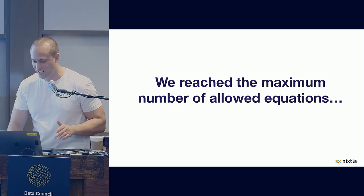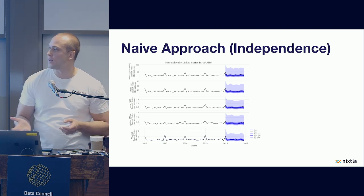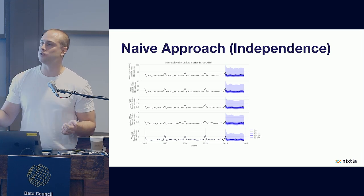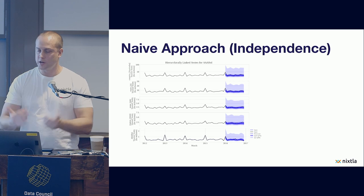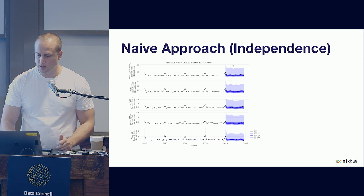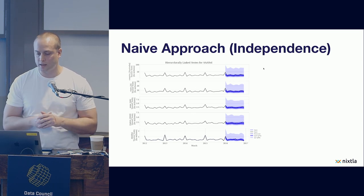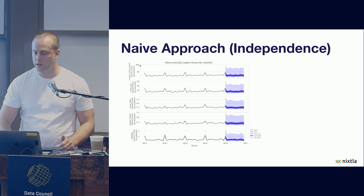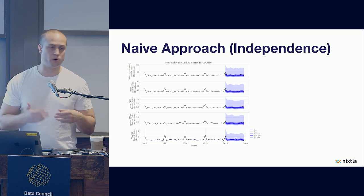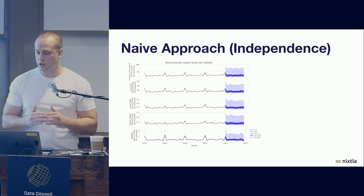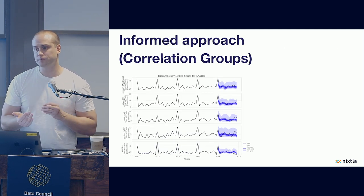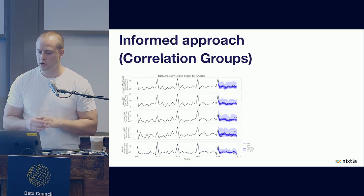And thankfully, we have reached the maximum number of equations, so I'm not going to introduce any more. What I'm going to show you now is why this is relevant in terms of the empirical results that we have gotten from the research. Here you can see the confidence intervals of a naive approach where we are doing naive bottom-up. This is we are adding the probabilities in a normal way. And as you can see, the confidence intervals are very, very wide. They reach from zero to 100.